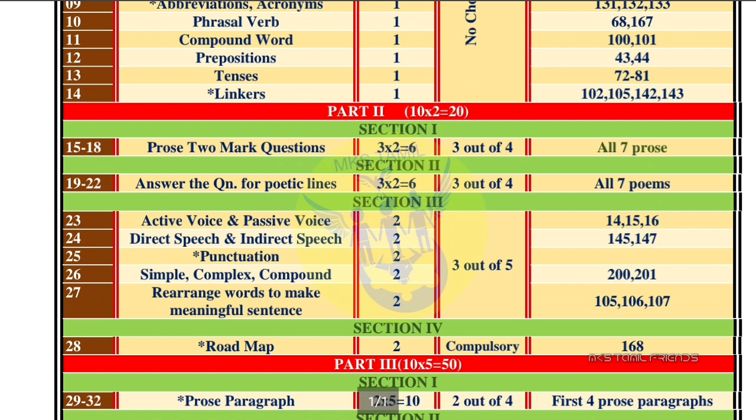In Part 2, you will have 10 questions — that is a total of 20 marks. Question numbers 15 to 18 are the 2-mark questions. You will have 2 more questions. The choice is 3 out of 4, giving you 4 questions and 7 prose options.